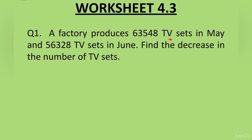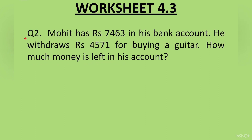Question 1: A factory produces 63,548 TV sets in May and 56,328 TV sets in June. Find the decrease in the number of TV sets.